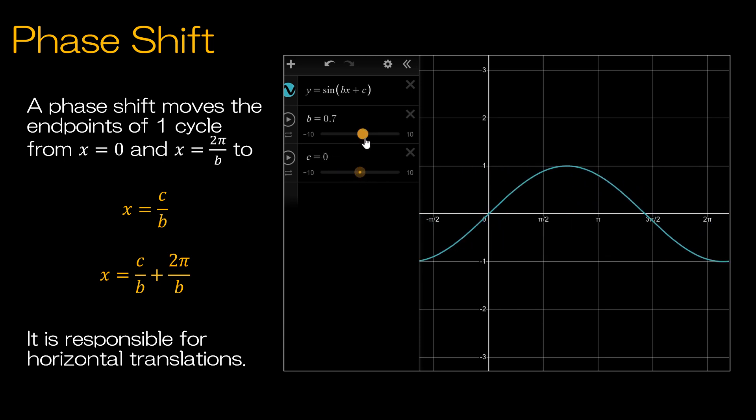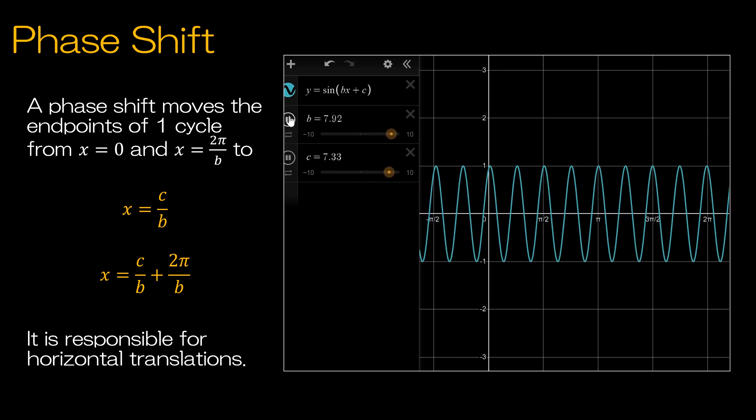So one thing I do want to point out is with b, when we are shifting the period, that's going to affect the intercepts, the location of those intercepts. c is also going to affect the location of those intercepts because it's going to shift it right or left. So again, those two working together, we've got all sorts of funny stuff going on.